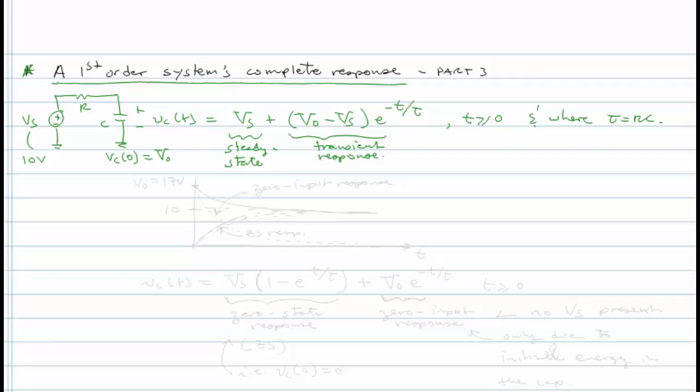Now let's plot what this might look like. Let's think about a case where VO is not zero. So if VS was 10 volts, let's say here's 10 volts, and let's say that VO was actually equal to 17 volts right here, not zero.